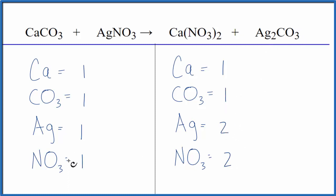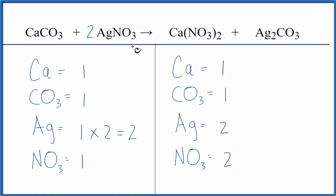So it looks like the silver and the nitrate aren't balanced. In fact, we need two of each, and we can accomplish that by putting a coefficient of two in front of the silver nitrate — one times two gives us two. The silvers are balanced, and the two applies to everything here, so we have one nitrate times two, gives us two of those, and we're done. This equation is balanced.